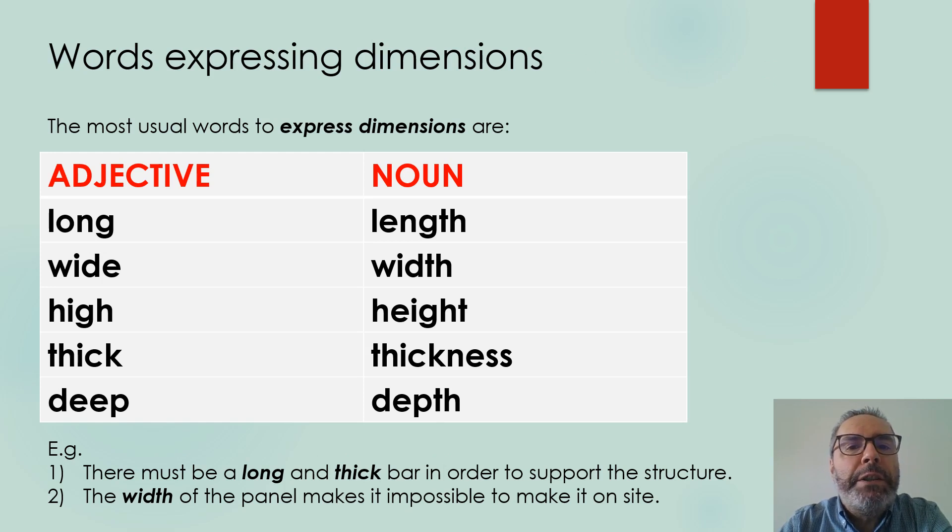To express dimensions we have words that are normally categorized into adjectives or nouns. For these five dimensions we have the adjectives long and length, wide with the corresponding noun width.